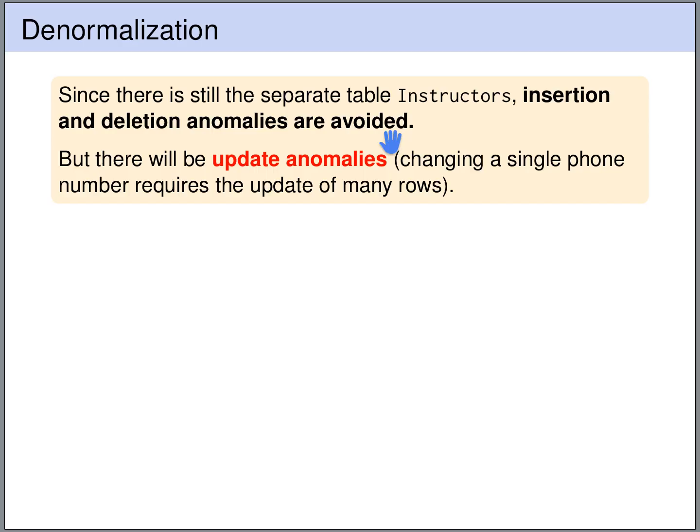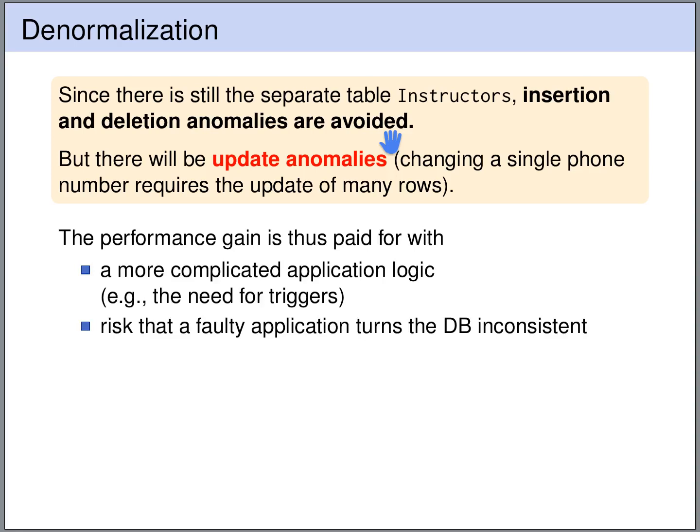So we have slightly faster queries to retrieve the phone number for a particular course. However, we pay for this performance improvement with more complicated application logic — the applications have to update the phone number in multiple places. Also, updates become slower because there is an overhead of having to update multiple phone numbers. And we risk that if the application accessing the database is faulty, it can turn the database state inconsistent. For example, if it only updates the phone number in the instructors table and not in the courses table, you suddenly have an inconsistent database state.